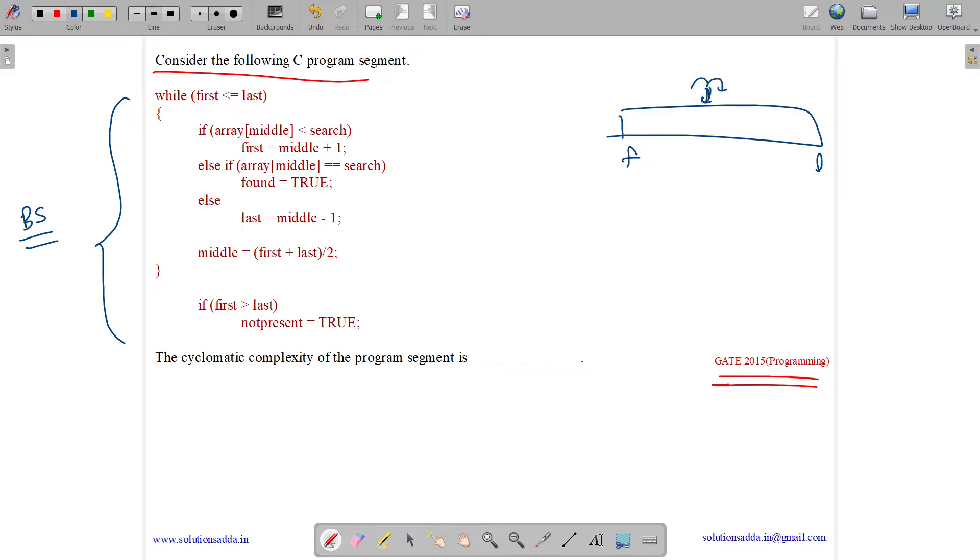Else if we found it, we return from here, found equals to true and come out of the loop. Else we do last equals to middle minus one. After coming out, we check if the item was not present, then first would have moved past in front of the last, then not present equals to true.